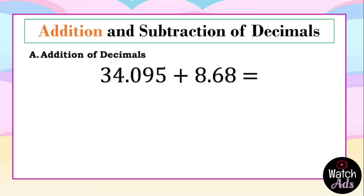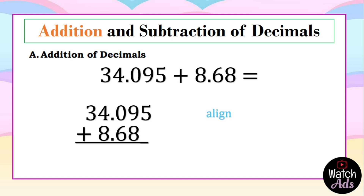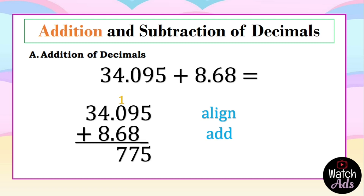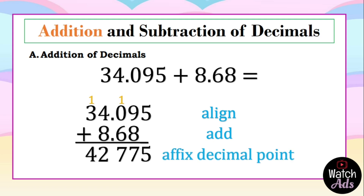Another example: we have 34 and 95 thousandths plus 8 and 68 hundredths. First step, we align the decimal points. Then we add: 5 plus 0 plus 8 gives us 13 — that's 3, carry 1. 1 plus 9 plus 6 is 16 — that's 6, carry 1. Wait, let me redo: 5 plus 8 is 13, carry 1; 1 plus 0 plus 6 is 7; 4 plus 8 is 12, carry 1; 1 plus 3 is 4. Then we affix the decimal point between 2 and 7. Our final answer is 43 and 775 thousandths.